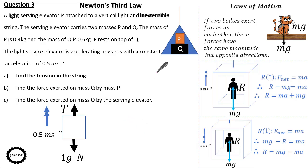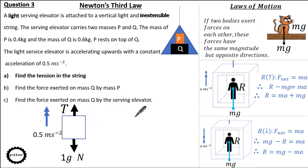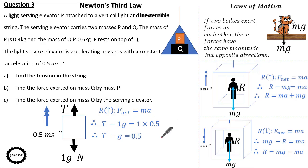Drawing the force diagram, I've taken the elevator and masses p and q as one complete object since they all accelerate upwards at 0.5 m/s². The elevator is light so adds no mass; total mass is 0.4 + 0.6 = 1 kg, so total weight is 1g Newtons. Taking up as positive and resolving: T minus g equals 1 times 0.5, so T equals 0.5 plus g. Using g = 9.8, T equals 10.3 Newtons.